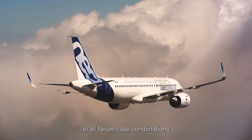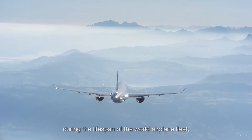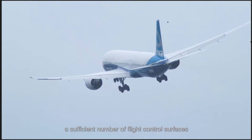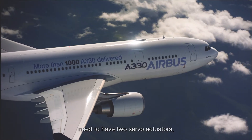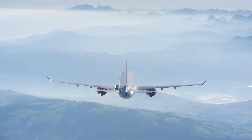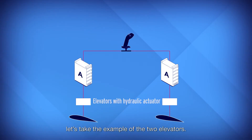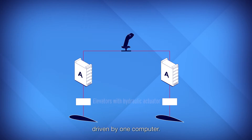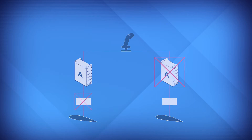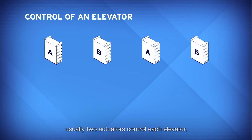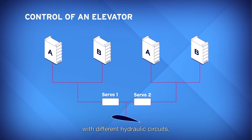In all failure case combinations considered as possible during the lifespan of the world airplane fleet, a sufficient number of flight control surfaces must remain available. For this reason, most surfaces need to have two servo actuators driven by several computers. For example, with the two elevators — if each had only one hydraulic actuator driven by one computer, and the hydraulic circuit on one side and the computer on the other side fail, both elevators would be lost, which is obviously unacceptable. In a standard design, usually two actuators control each elevator with different hydraulic circuits, and two different computers can drive each actuator.